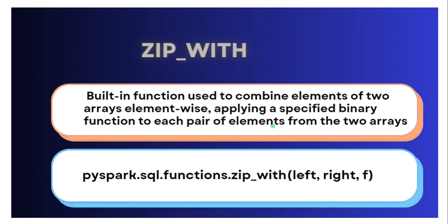That is the use of zip_with. When I give a demo, you will understand. This is part of the PySpark.sql.functions library, and zip_with is the keyword we have to use. It accepts three parameters: the left-side array column, the right-side array value, and the binary function which we have to apply. This is very straightforward. So let's get started with the demo.